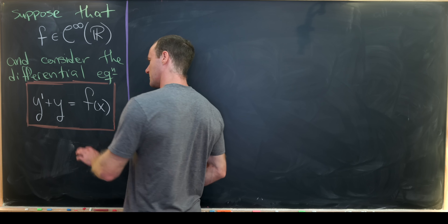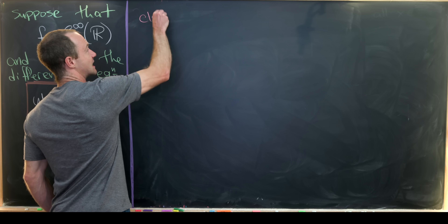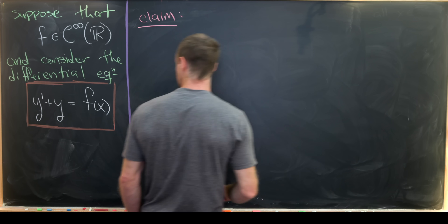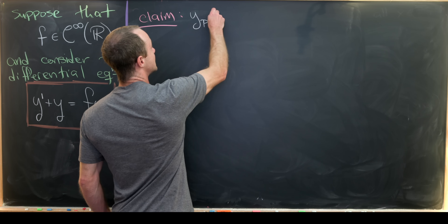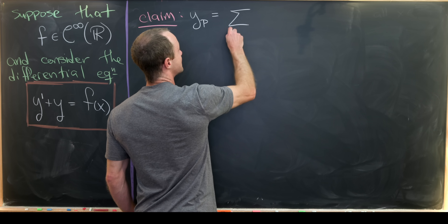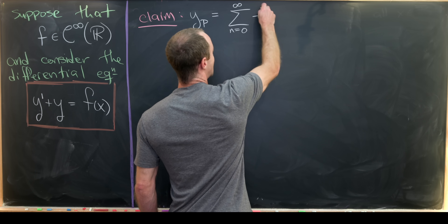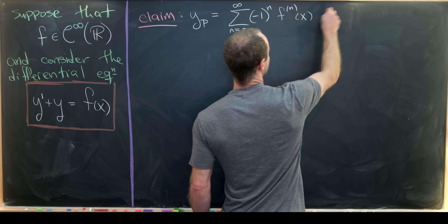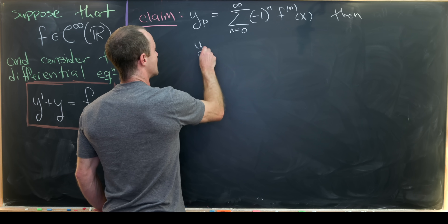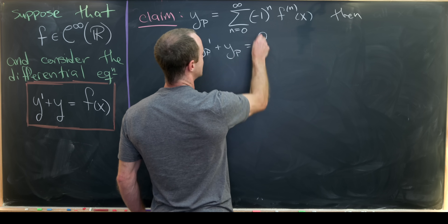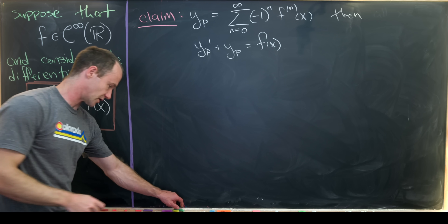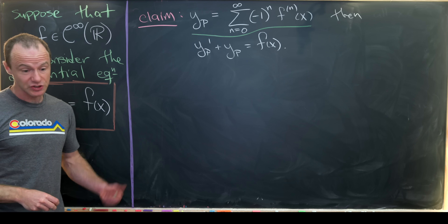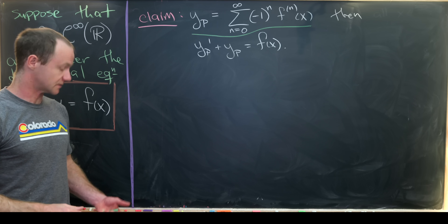Let's look at this seemingly very nice solution method. The claim is: if yp equals the sum as n goes from 0 to infinity of (-1)^n times the nth derivative of f, then yp' + yp = f(x). In other words, this sum is in fact a particular solution to this differential equation.